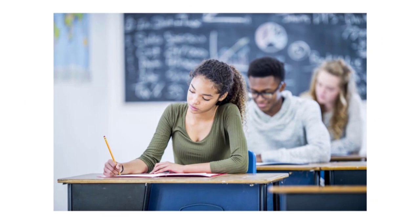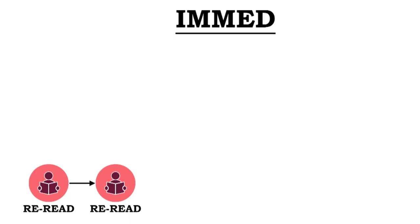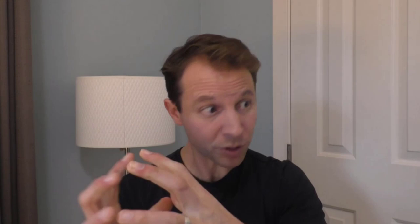Here's what they found. The group that simply reread the text showed a 39% gain over their pretest scores immediately after the study. The group that did the generative activity first and then retrieval practice showed a 54% gain. And the group that did retrieval first and generative second showed a 62% gain. Both generative and recall are strong techniques — both did much better than simply restudying — but they weren't equivalent. The retrieval-first group appeared to learn a little more.